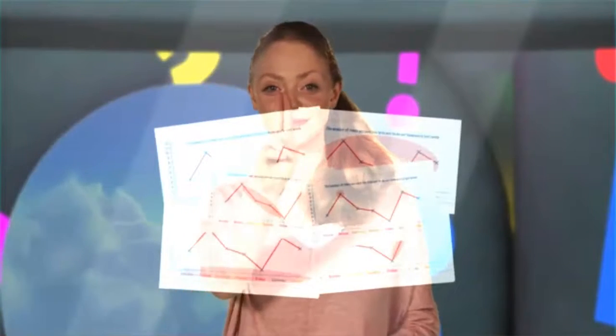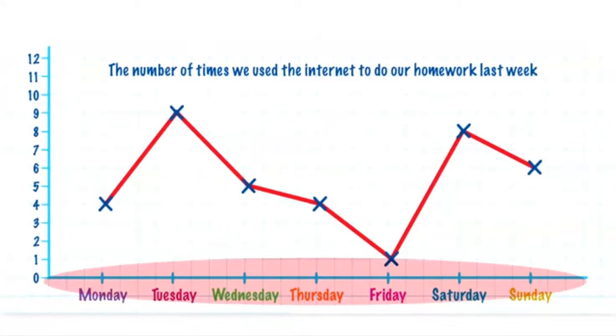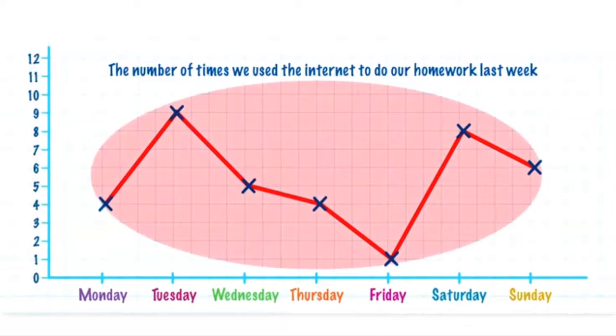Now listen to how we read a line graph. This line graph has got an axis below it with the days of the week. On the left, there's an axis with the number of children who used the internet to do their homework. Above the days, there's a line between the numbers.